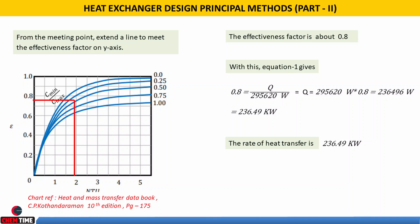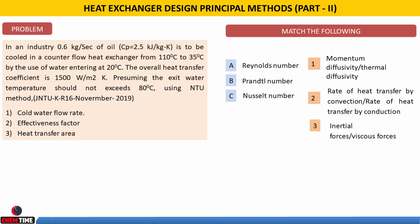These graphs are available for both parallel flow and counter flow configurations. For counter flow, refer to 'Heat and Mass Transfer Data Book' by C.P. Kothandaraman, 10th edition, page 175. Locate NTU = 1.95, draw a vertical line to meet the C_min/C_max = 0.4 curve, then draw a horizontal line to read the effectiveness ε = 0.8. Since ε = Q / Q_max and Q_max = C_min × (T_H,in − T_C,in) = 295,620 W, Q = 0.8 × 295,620 ≈ 236.49 kW.